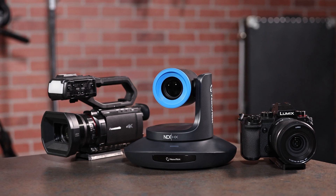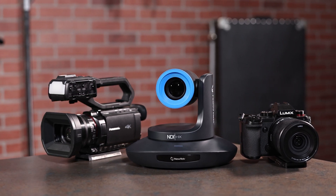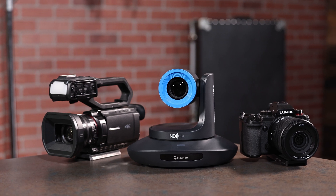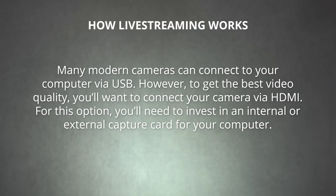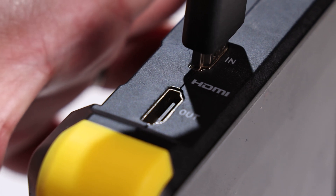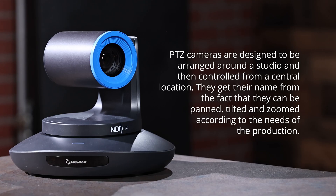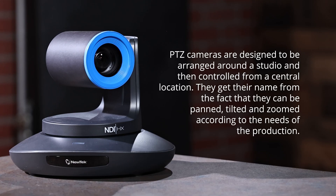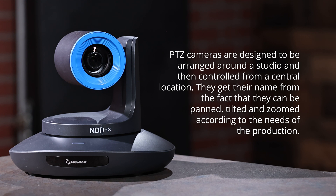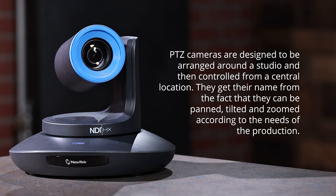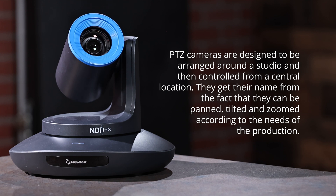Up next, we have a dedicated video camera. These include point-and-shoot vlogging cameras, mirrorless cameras, DSLRs, and camcorders. Many modern cameras can connect to your computer via USB. However, to get the best video quality, you'll want to connect your camera via HDMI. For this option, you'll need to invest in an internal or external capture card for your computer, or purchase a hardware streaming encoder with HDMI ports. Also in the dedicated camera category, we have pan, tilt, zoom cameras. PTZ cameras are designed to be arranged around a studio and controlled from a central location, and can be panned, tilted, and zoomed according to the needs of the production.